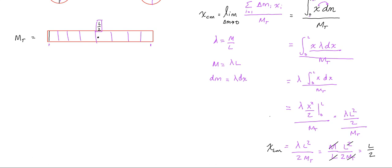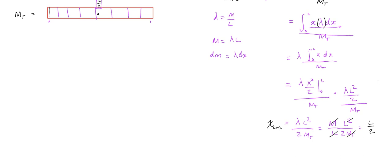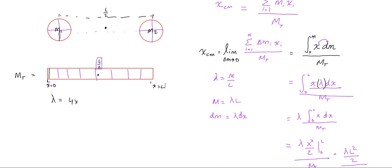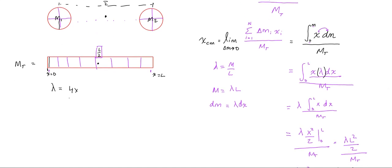You can see here this was so redundant. There was no reason to go through and do this because lambda was not a function, it was a constant value. It would have been simpler to just say it's evenly distributed, right at the center. But you can see if lambda was a function, let's say λ = 4x, this means as I work from x = 0 to x = L, this thing gets more and more dense as we work our way across.